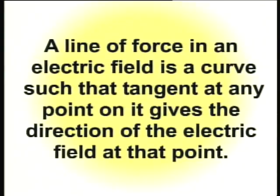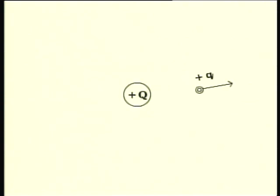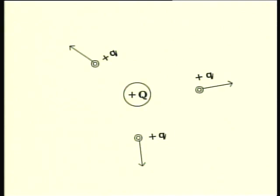Pictorially, we can view this electric field in terms of electric lines of force. A line of force in an electric field is a curve such that the tangent at any point on it gives the direction of the electric field at that point. It is the path along which a positive test charge moves in an electric field if free to do so. To understand this more clearly, let us consider an isolated positive charge Q. A small positive test charge would experience a force of repulsion.